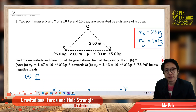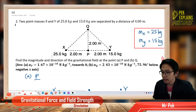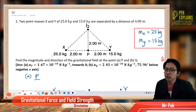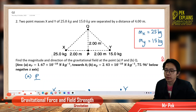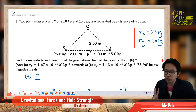Hi everyone. Now let us continue with the second question in gravitational force and field strength. Two point masses X and Y of 25 kilogram and 15 kilogram are separated by a distance of 4 meter. We have two point masses X and Y. Find the magnitude and direction of the gravitational field at point P and Q. We need to find the gravitational field for P and Q.